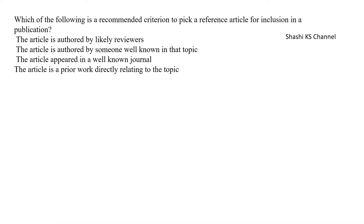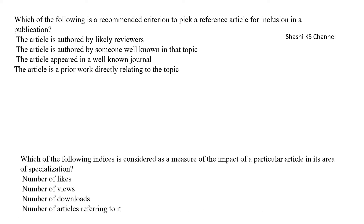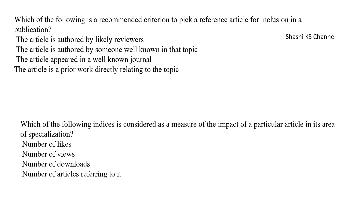Question 1: Which of the following is a recommended criterion to pick a reference article for inclusion in a publication? The options are: the article is authored by likely reviewers, authored by someone well known in that topic, appeared in a well-known journal, or is a prior work directly relating to the topic. The answer is: the article is a prior work directly relating to the topic.